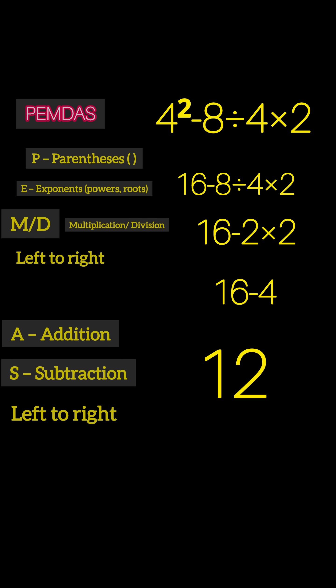So quick recap: if you take PEMDAS too literally, you'll get 15. If you just go left to right, you'll get 4. But if you follow both rules together, you'll always get the right answer: 12.